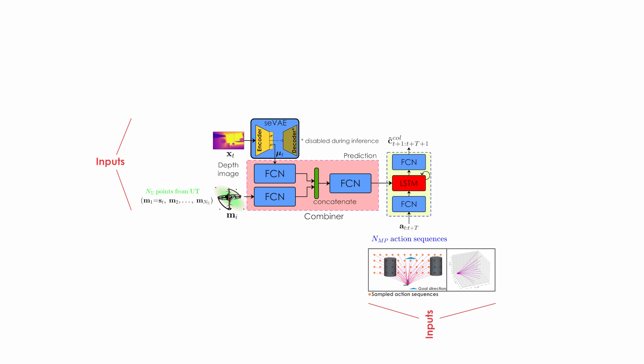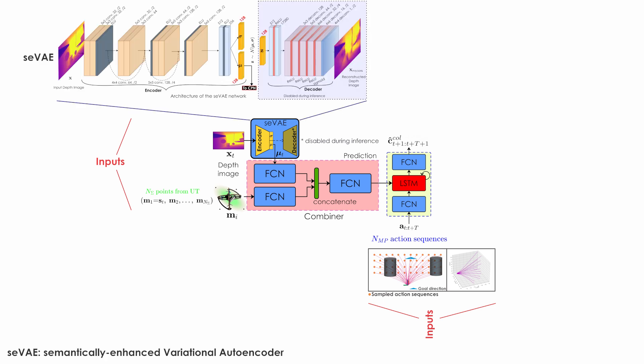This latent representation is then used to train a 3D collision prediction network in simulation to predict the collision scores for candidate action sequences in a library of motion primitives.